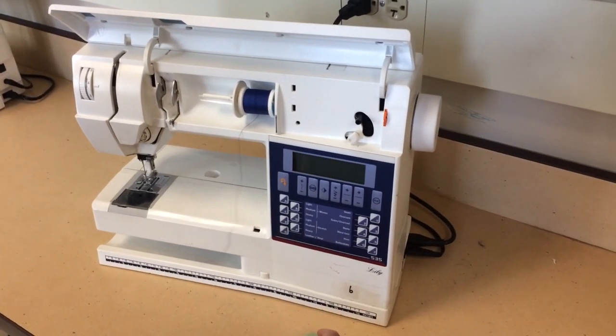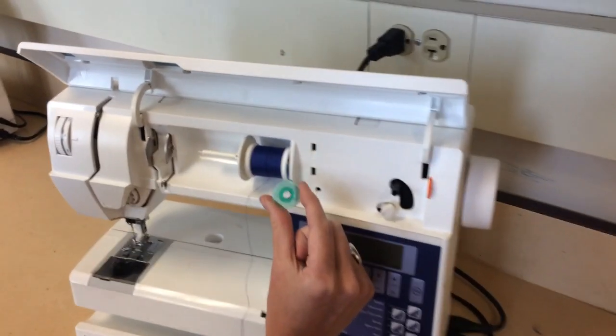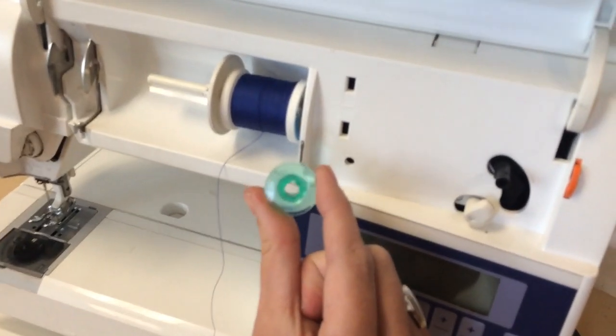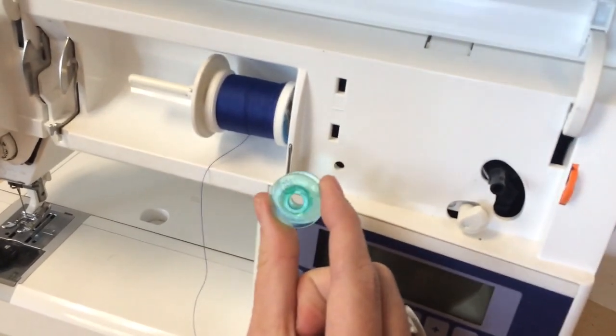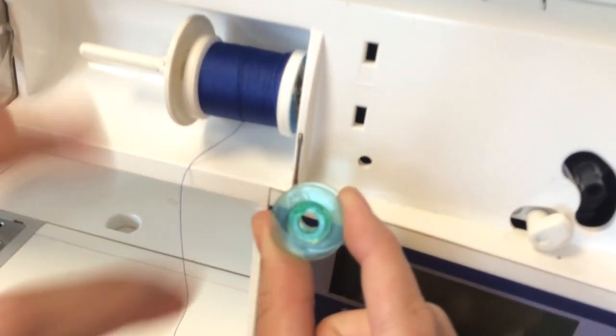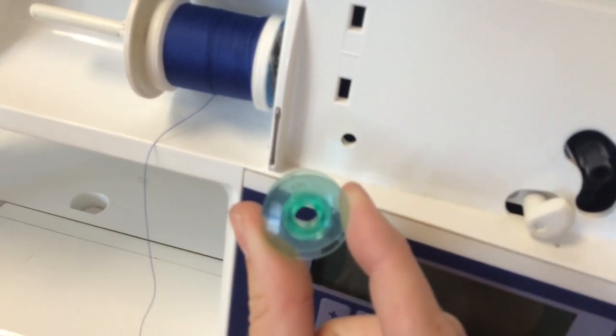To wind the bobbin on your Viking sewing machine, first make sure you have the correct bobbin. You should be using the green colored bobbin for your sewing machine. You can feel a little H or a little V on top. That's how you know you have the correct bobbin.